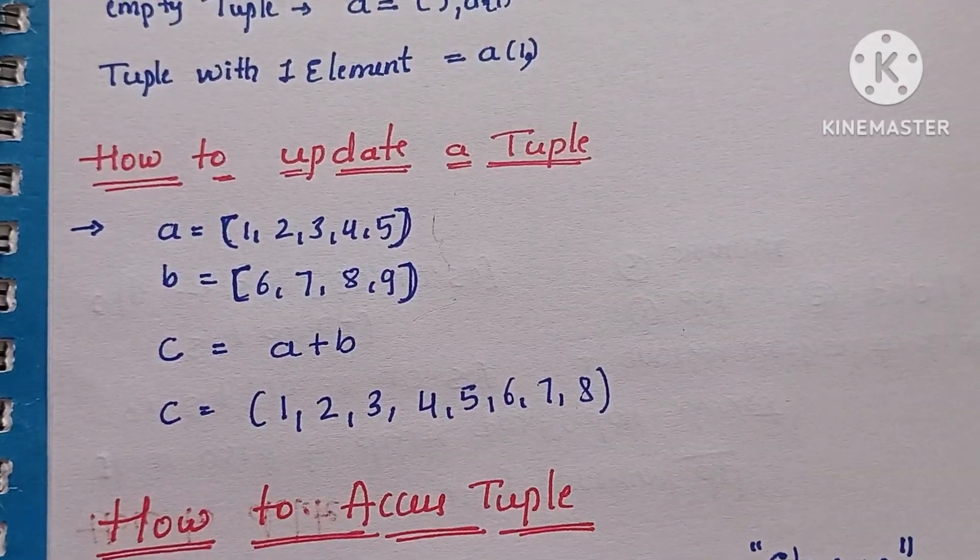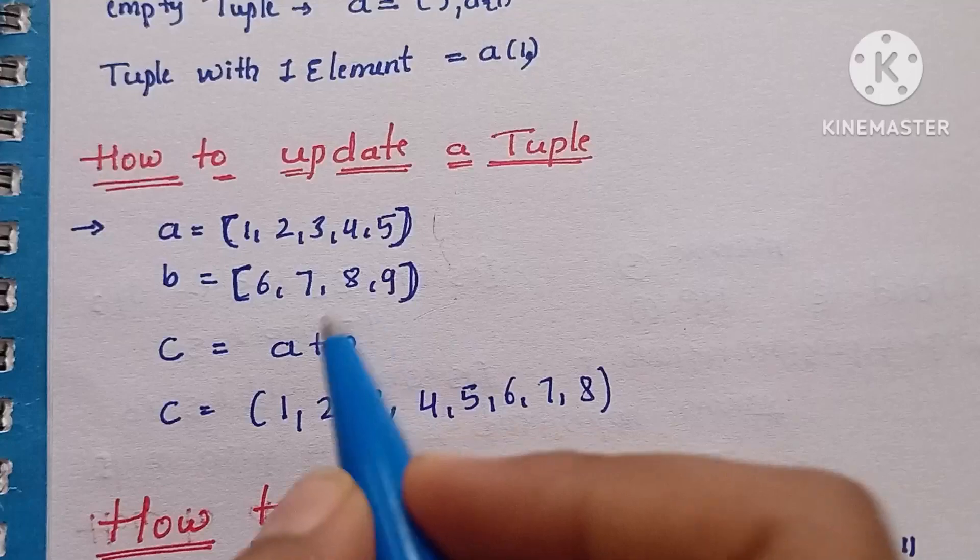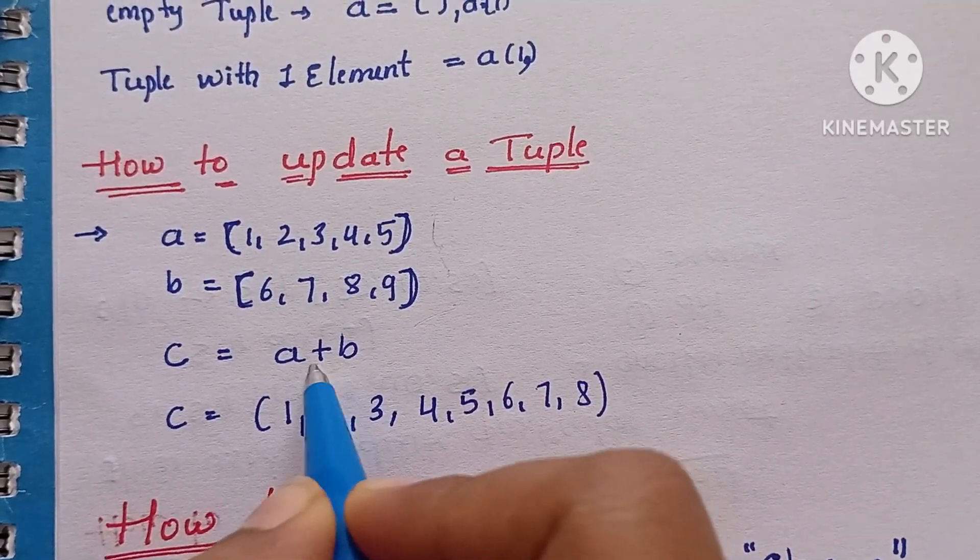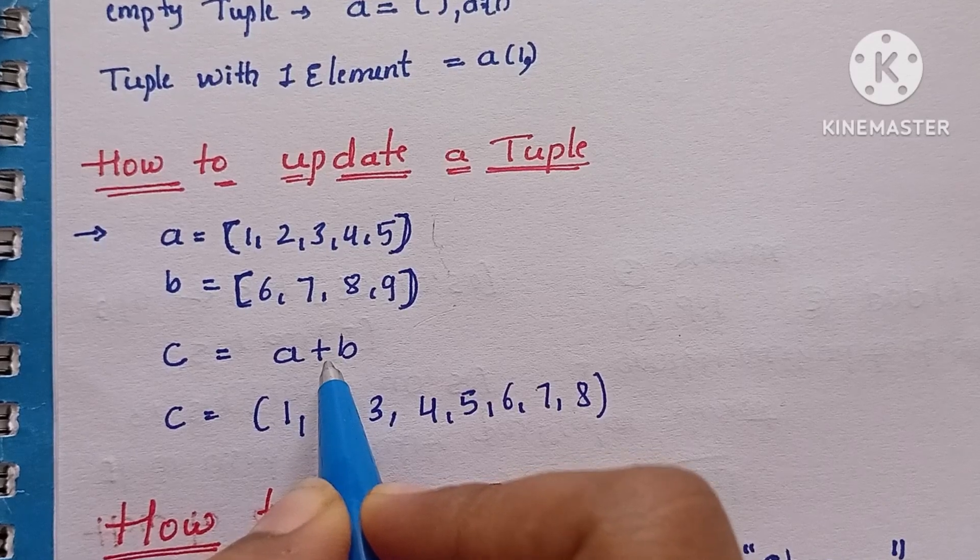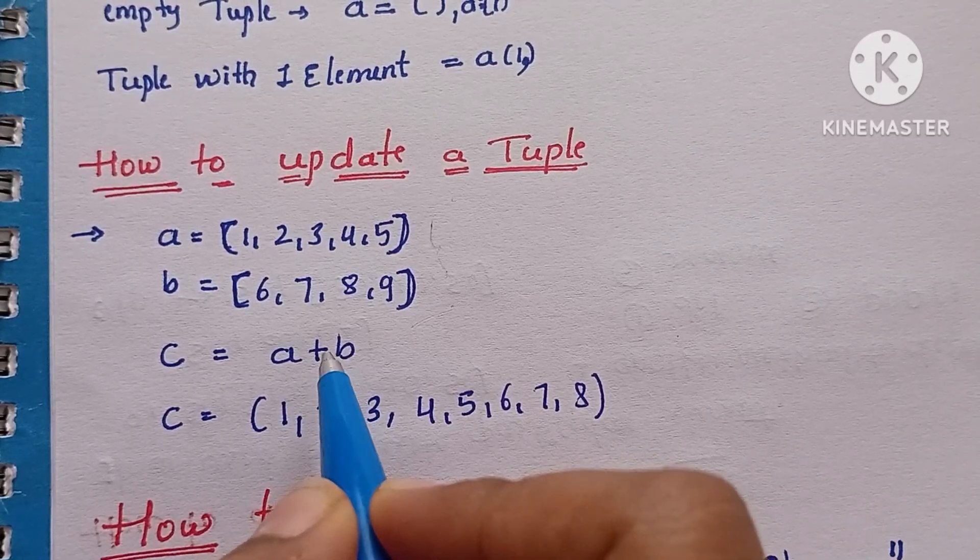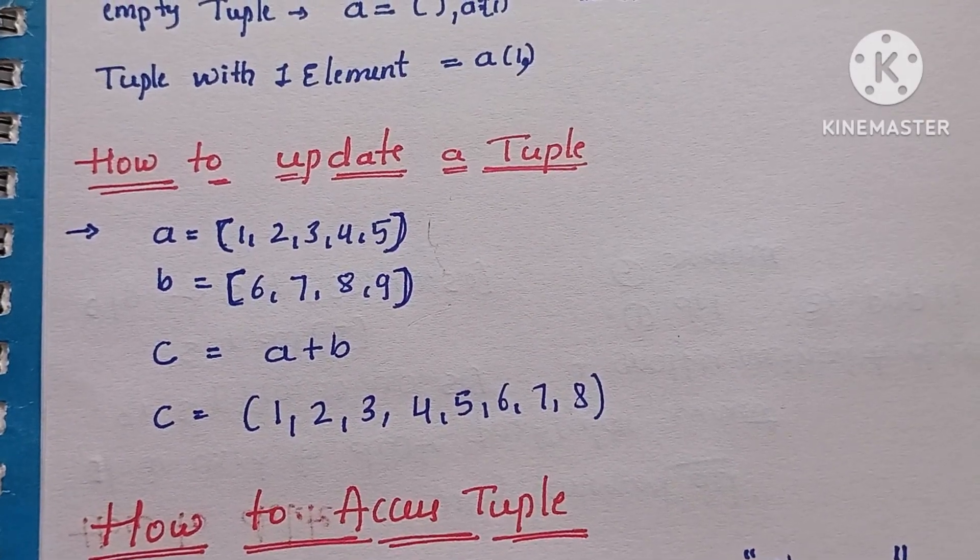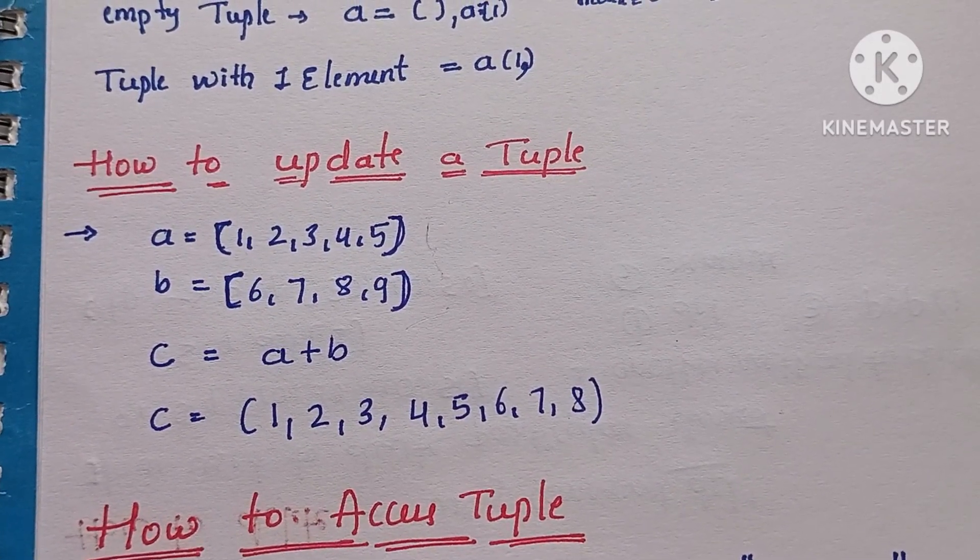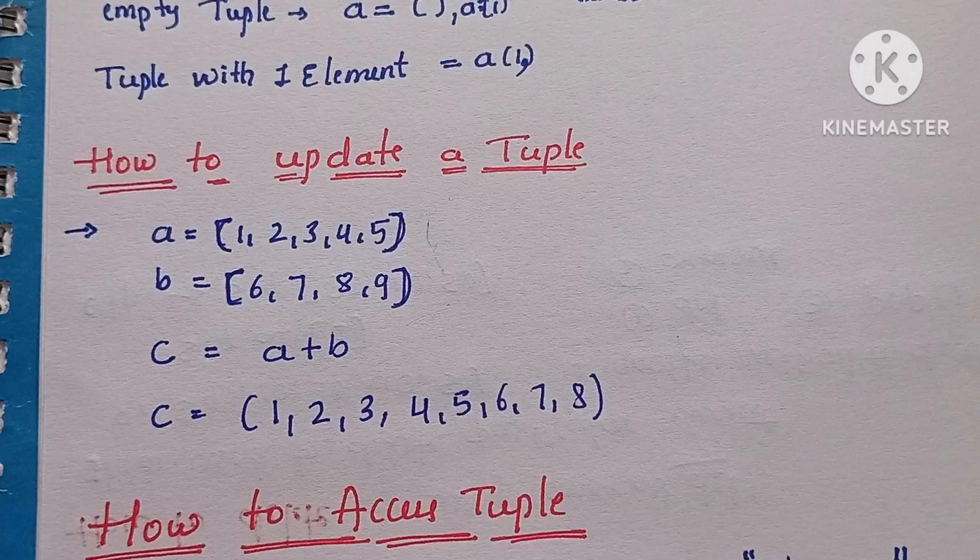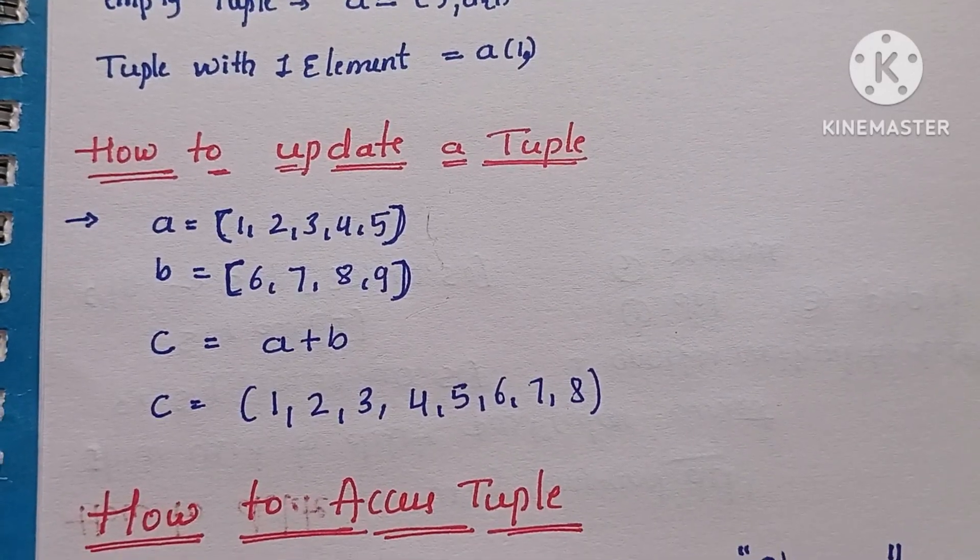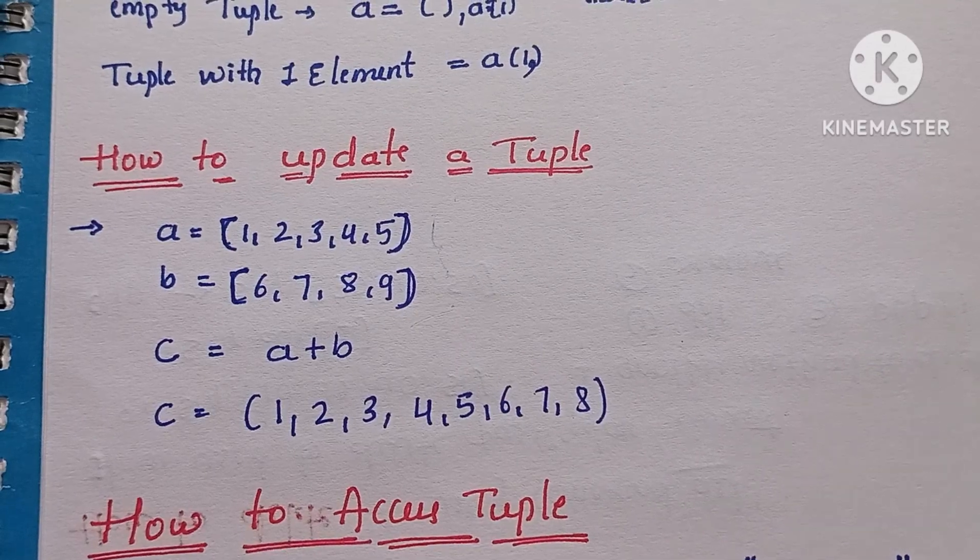You need to use this concatenation operation. By using this concatenation operation only you can add more number of elements. We cannot update the same tuple, so for that purpose we have to assign one more tuple. So this is the updation of the tuple.